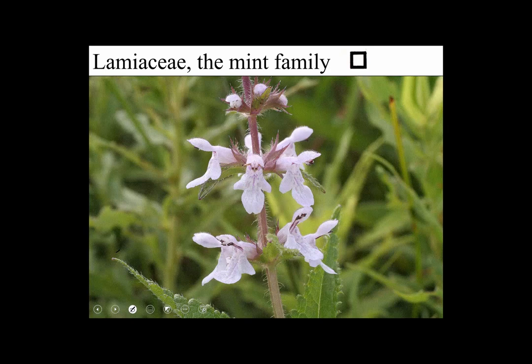The Lamiaceae, the mint family, is a very well-marked and distinctive family. What features depart from the primitive flower features of FENSH? We have flower parts that are fused. We definitely have a sympetalous corolla here with five petals — one on the top, two on the side, and two on the bottom, all fused together. We also have bilateral symmetry.